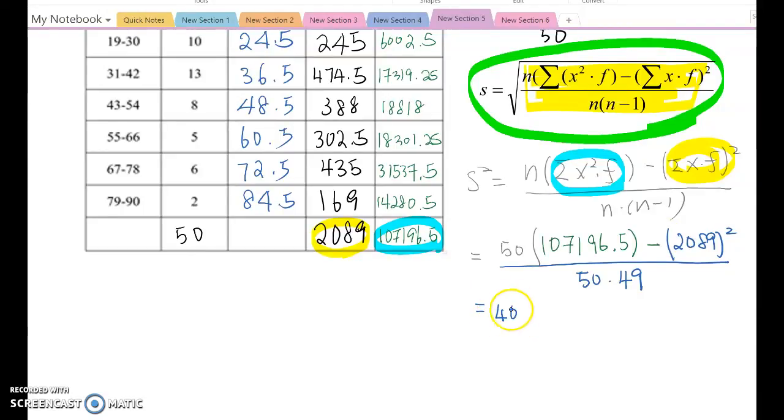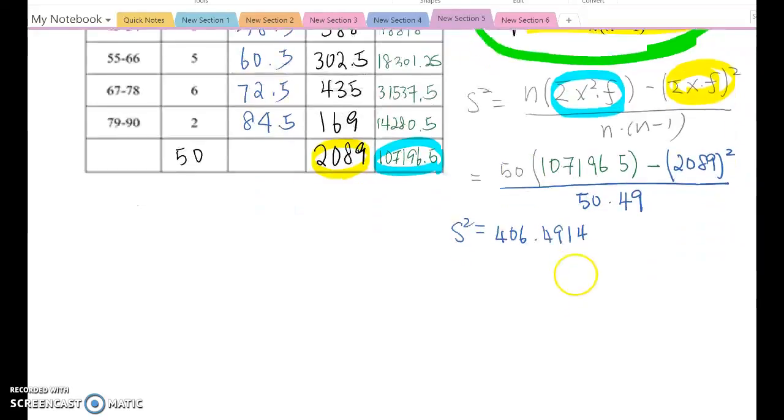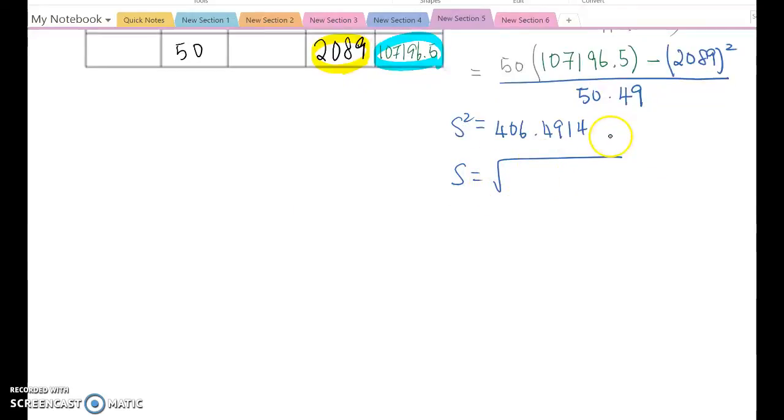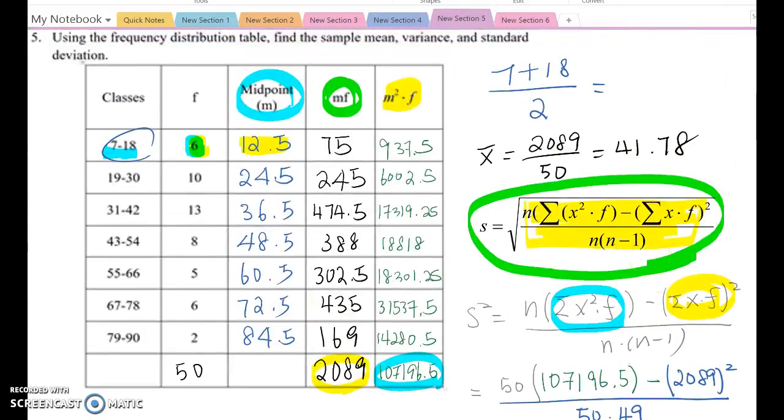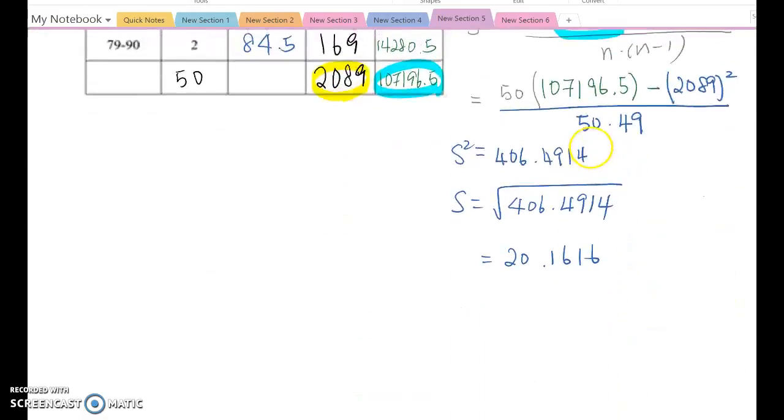So now we can say this is our variance here. Now the standard deviation means S equal to square root variance, so 406.4914, then you will get 20.1616, that will be your standard deviation. The final answer: mean is 41.78, the variance 406.4914, the standard deviation 20.1616.